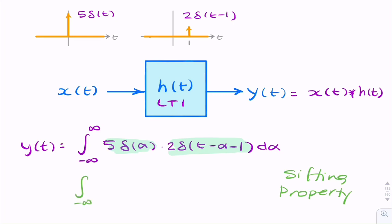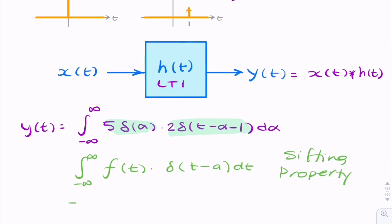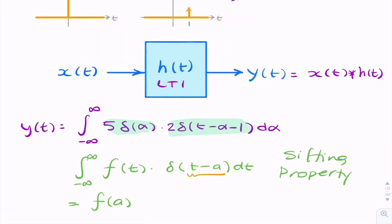when you integrate any function times an impulse at some value alpha, or let's call it a in this case, dt, then we can write the result immediately as f(a), where a is that value of t that makes the delta function non-zero. So t minus a equals 0,